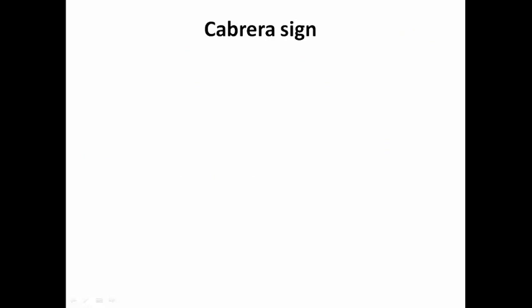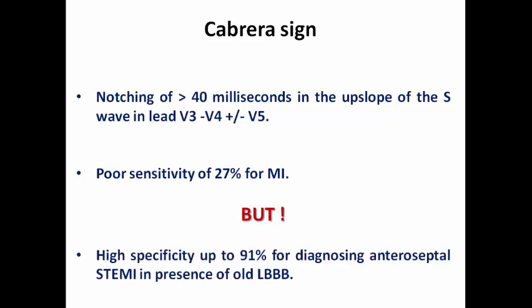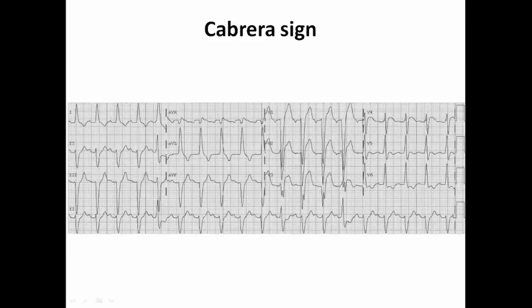Regarding the other two signs: the Cabrera sign is the first. It may not be very commonly seen, but it is very characteristic when present. It means there is a notching of more than 40 milliseconds in the upslope of the S wave in leads V3, V4, and possibly V5 — mostly in the left precordial leads. It shows poor sensitivity of 27% for myocardial infarction, but high specificity up to 91% for diagnosing anteroseptal STEMI in the presence of old left bundle branch block. In the ECG example, we can see a notch or slurring in the upslope of the ascending limb of the S wave starting from V2-V3 and extending to V5. When I see this sign, I assume most probably it is acute left bundle and may consider primary PCI.